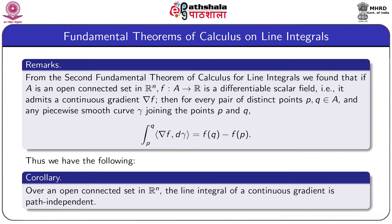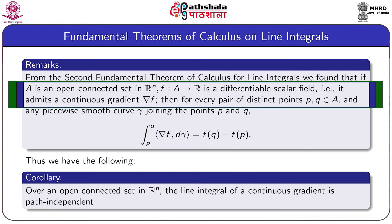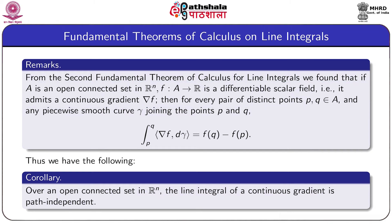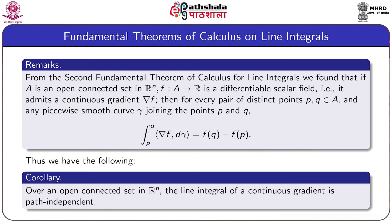One remark: from the Second Fundamental Theorem of Calculus for line integrals, we found that if A is an open connected set in R^n and F from A to R is a differentiable scalar field admitting a continuous gradient, then for every pair of points P and Q in A and any piecewise smooth curve gamma joining them, the integral from P to Q of grad F d-gamma equals F(Q) minus F(P). Note that P and Q need not be distinct. Hence, as a corollary: over an open connected set in R^n, the line integral of a continuous gradient is path independent.